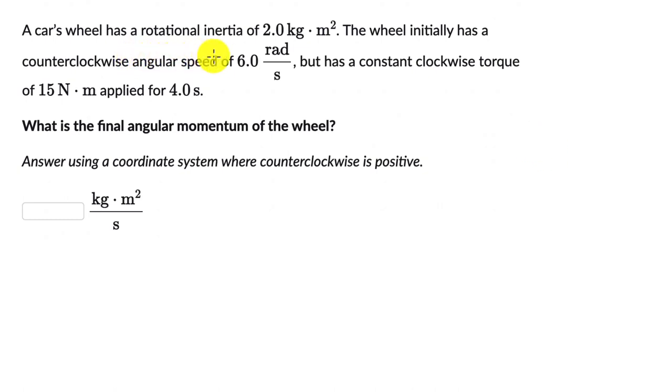A car's wheel has a rotational inertia of 2 kg·m². The wheel initially has a counter-clockwise angular speed of 6 radians per second but has a constant clockwise torque of 15 N·m applied for 4 seconds.